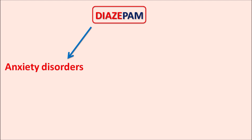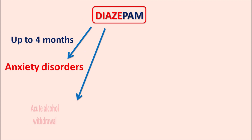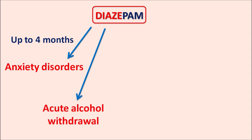Diazepam can be used in such anxiety disorders for short-term relief. This drug is useful for up to four months and can reduce anxiety. However, overdose as well as addiction of this drug limits its use in the treatment of anxiety. Similarly, diazepam is used to control the symptoms associated with acute alcohol withdrawal.